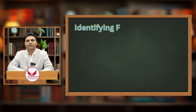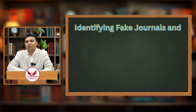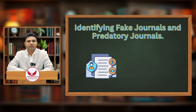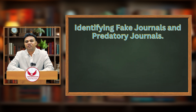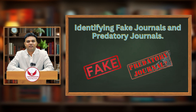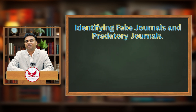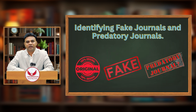Once we move forward, we need to understand a very important point: whether the journal you are publishing in is a genuine journal or a fake or predatory journal. At present, it is a very huge problem that every researcher is facing — it is very hard to identify fake journals and predatory journals. We will take a separate session on how to understand whether a journal is original, fake, or predatory.